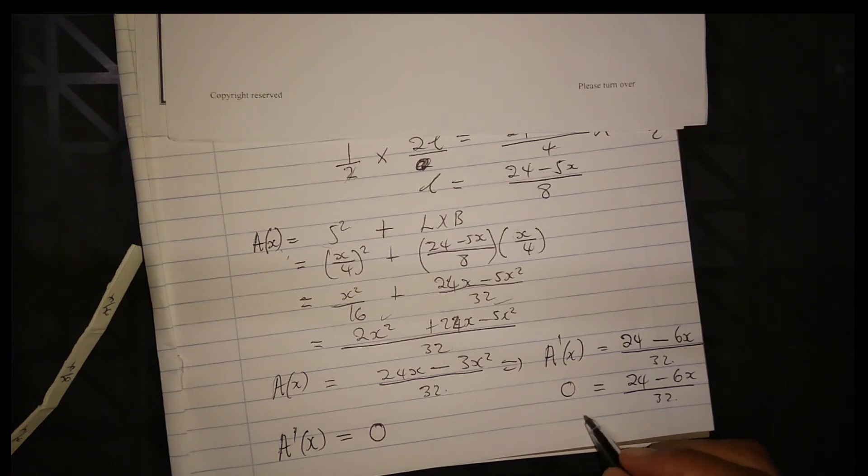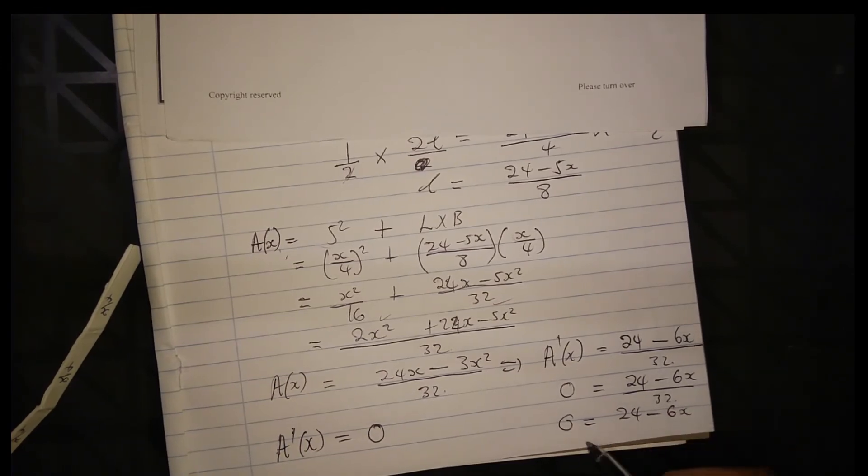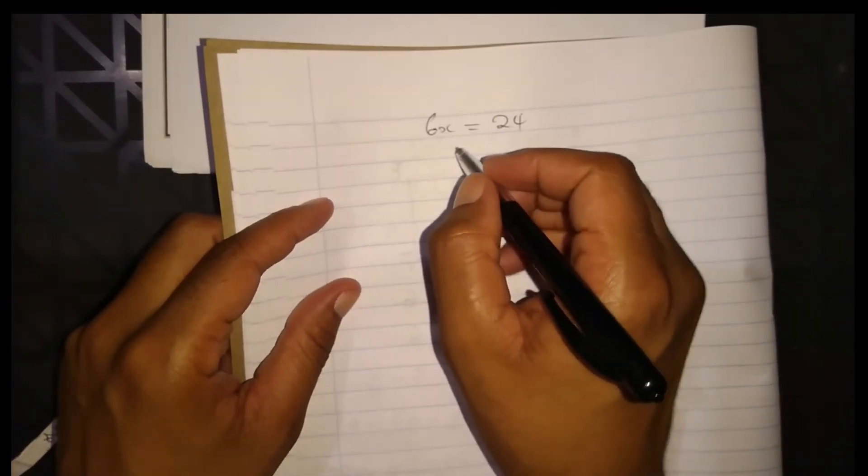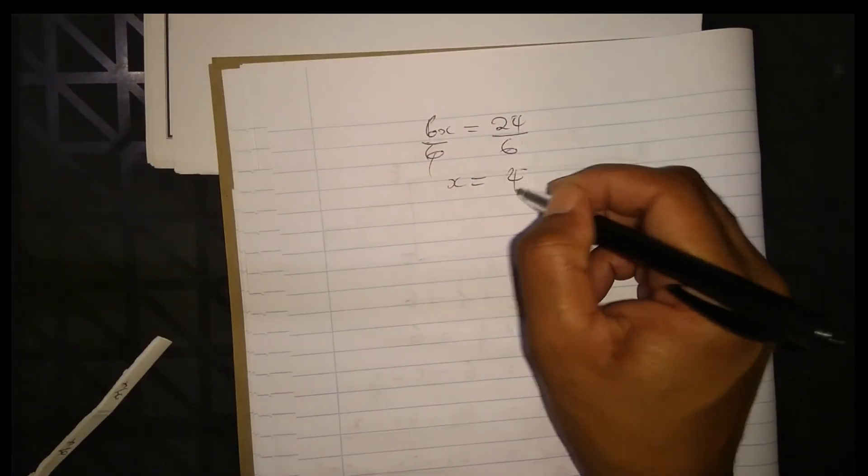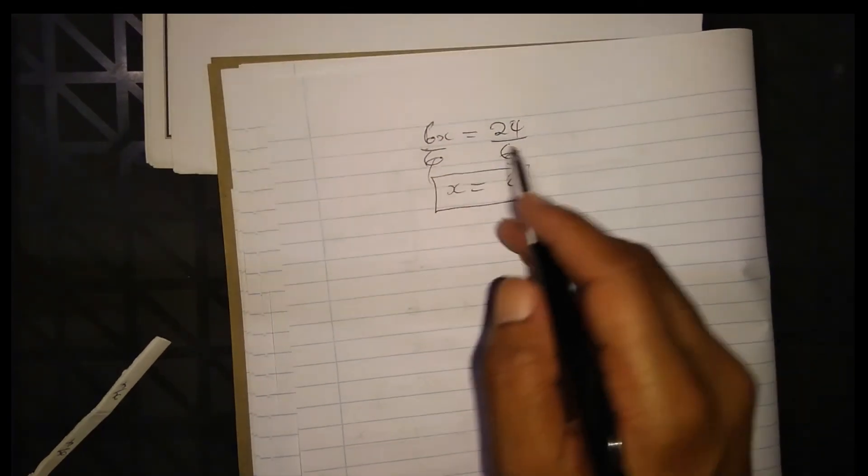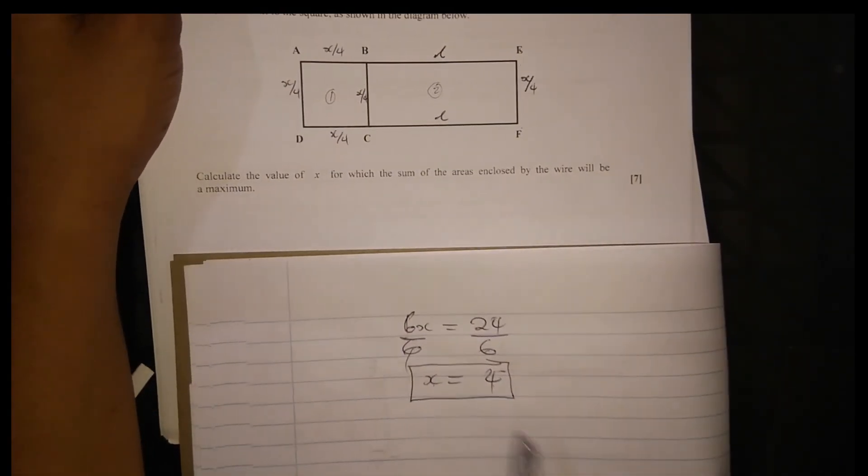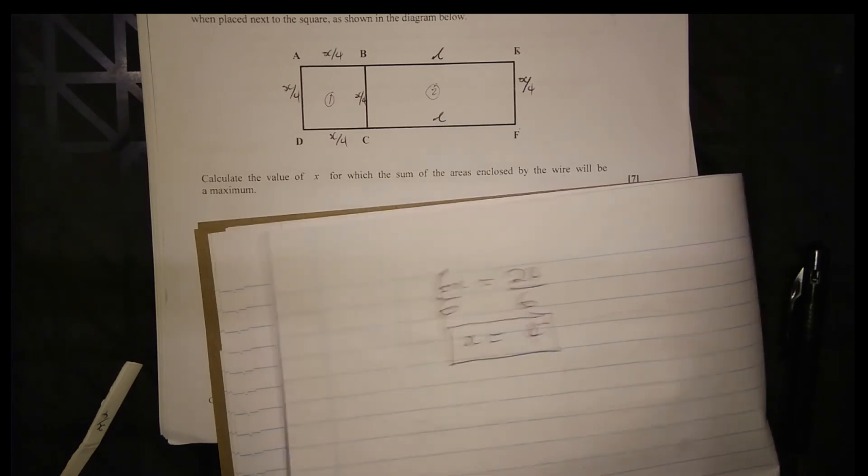The LCM for this equation is 32. 32 times 0 is 0. So 24 minus 6x equals 0. Transpose 6x: 24 equals 6x. Divide by 6: x equals 4. So this is the only value. The value of x for which the sum of the areas enclosed by the wire will be a maximum is when x equals 4. Question 9 is complete.